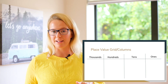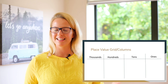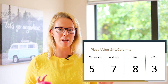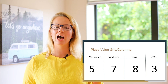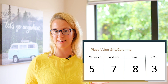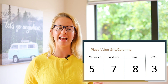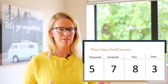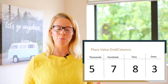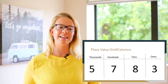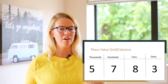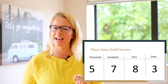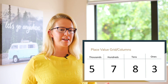The place value column starts with ones, then tens, then hundreds, then thousands. It goes on a lot longer than this, but we'll just start with this for now. If I put four numbers in these columns, we can use that to figure out the value of each digit. We've got the number five thousand seven hundred and eighty-three. If I asked you what is the value of the eight — we know the eight is in the tens column — so that means it is eight groups of ten, or eighty. The value of the eight in this number is eighty, or eight tens.